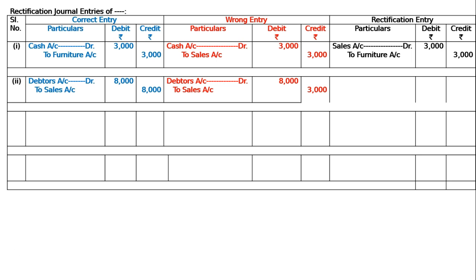Since all other amounts and accounts are correct, the rectifying entry credits sales account by five thousand. Suspense account is debited by five thousand, being under-casting of sales account rectified.